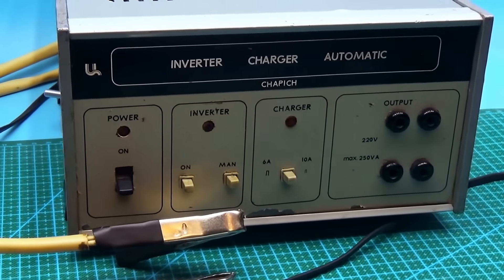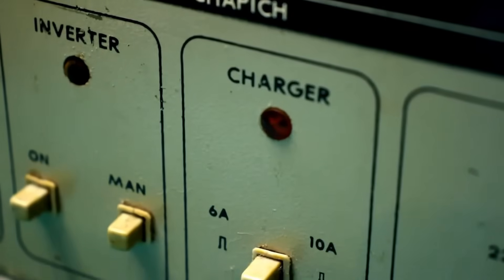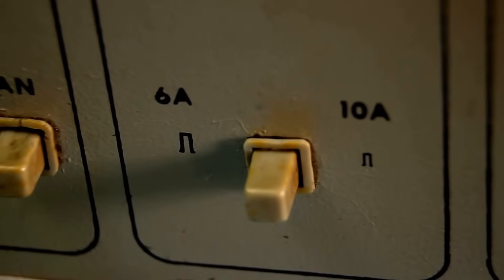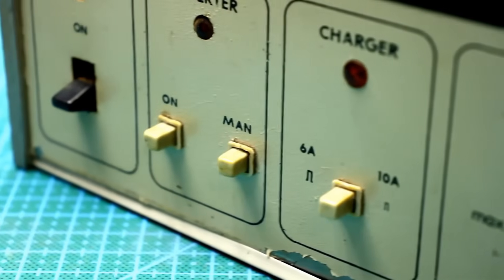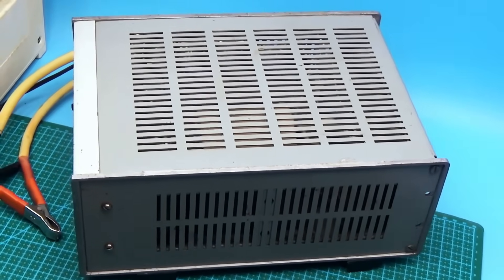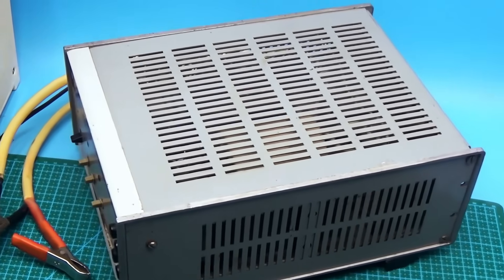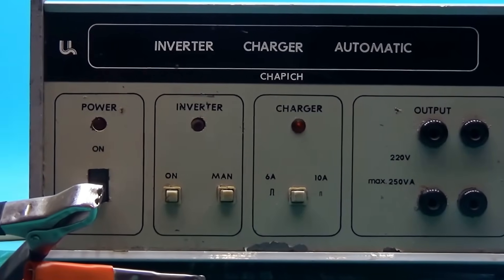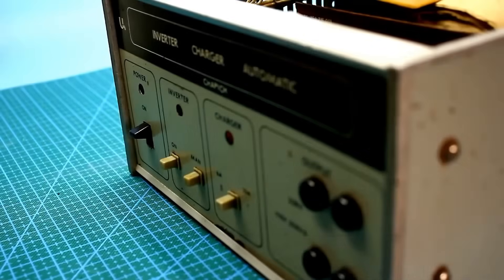A 12 to 220 volt converter plus an automatic charger with a current up to 10 amps. I think that even during the Soviet era, devices of this type were in demand, but they were extremely rare. It's something like a modern uninterruptible power supply. More precisely, with a little modification, it could be turned into an uninterruptible power supply.